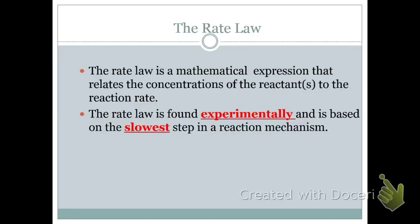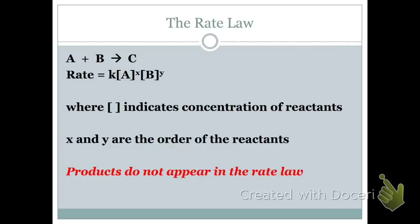Before we get started, let's talk about what the rate law looks like. If I have a reaction A plus B gives C, the rate would be expressed as: Rate = K[A]^x[B]^y. From the solutions unit, you remember that the brackets mean concentration of reactants. K is your rate law constant, and X and Y are called the order of the reactants.